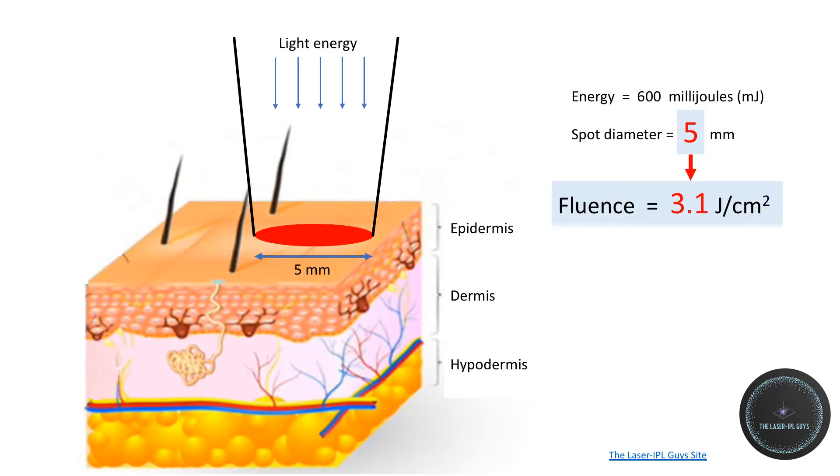If you set your laser for 600 millijoule output into a 5 millimeter spot diameter at the skin surface, then the fluence is simply the energy divided by the spot size area. In this case it would be 3.1 joules per square centimeter at the skin surface.